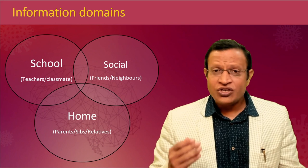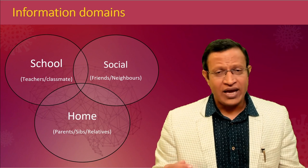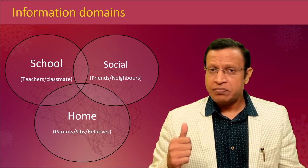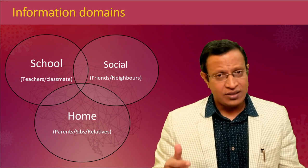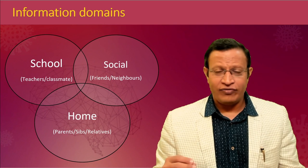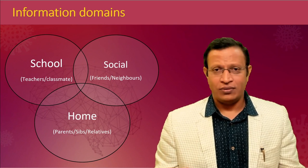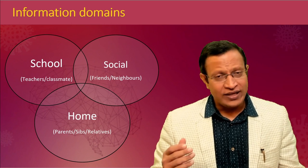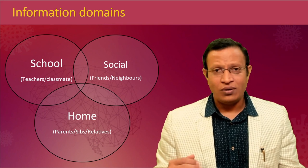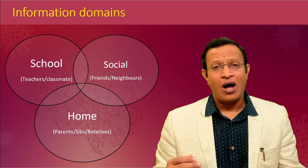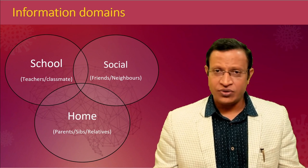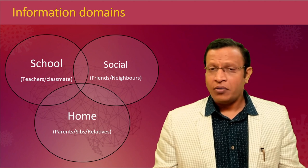These are the places where children spend maximum time. At home, children express their behavior, thoughts, and feelings, so we need to interview parents — if possible, both parents — as well as siblings, grandparents, and any significant caregivers. For school, you need to get information on how the child is performing academically — whether performance is increasing or decreasing — attention, concentration, behavior in school, and interaction with other kids and staff.